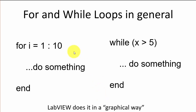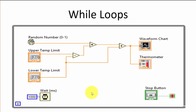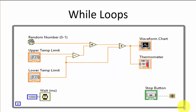But in LabVIEW we do this in a graphical way. The while loop is represented as a square, and everything inside this square is executed inside the while loop. We have a condition — in this case a stop button — and when the stop button becomes true, we exit the while loop. Typically the while loop executes very fast, so we also need to include a wait function to avoid using all the CPU on the computer.